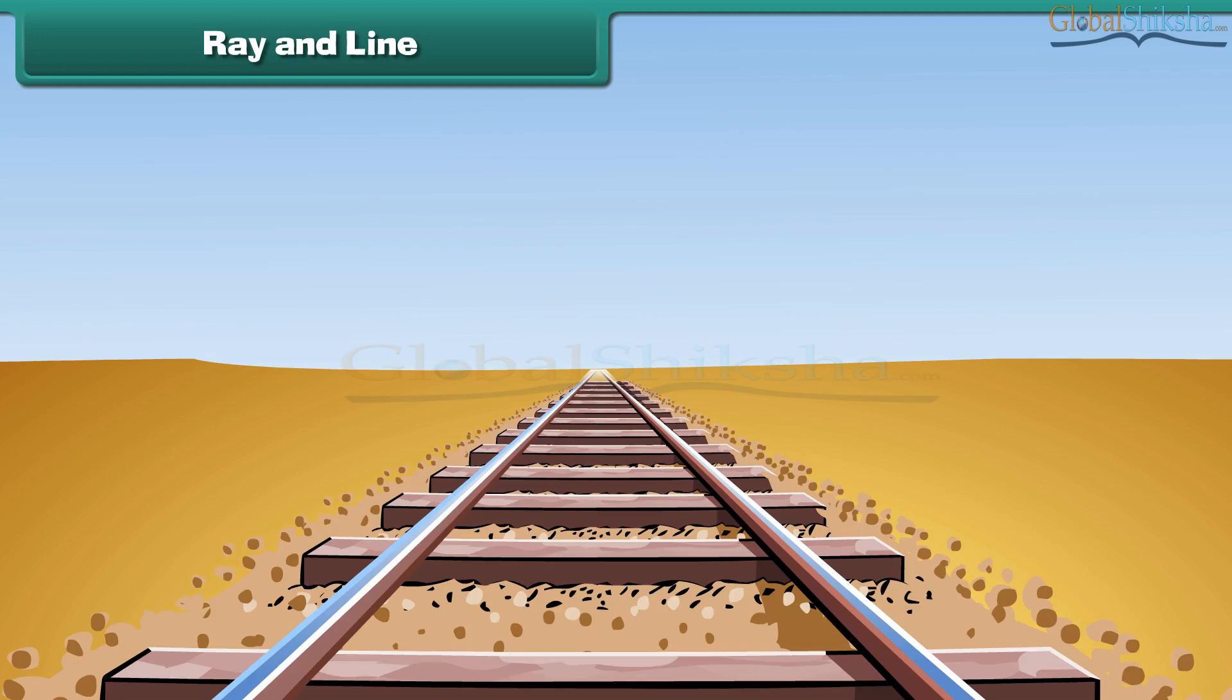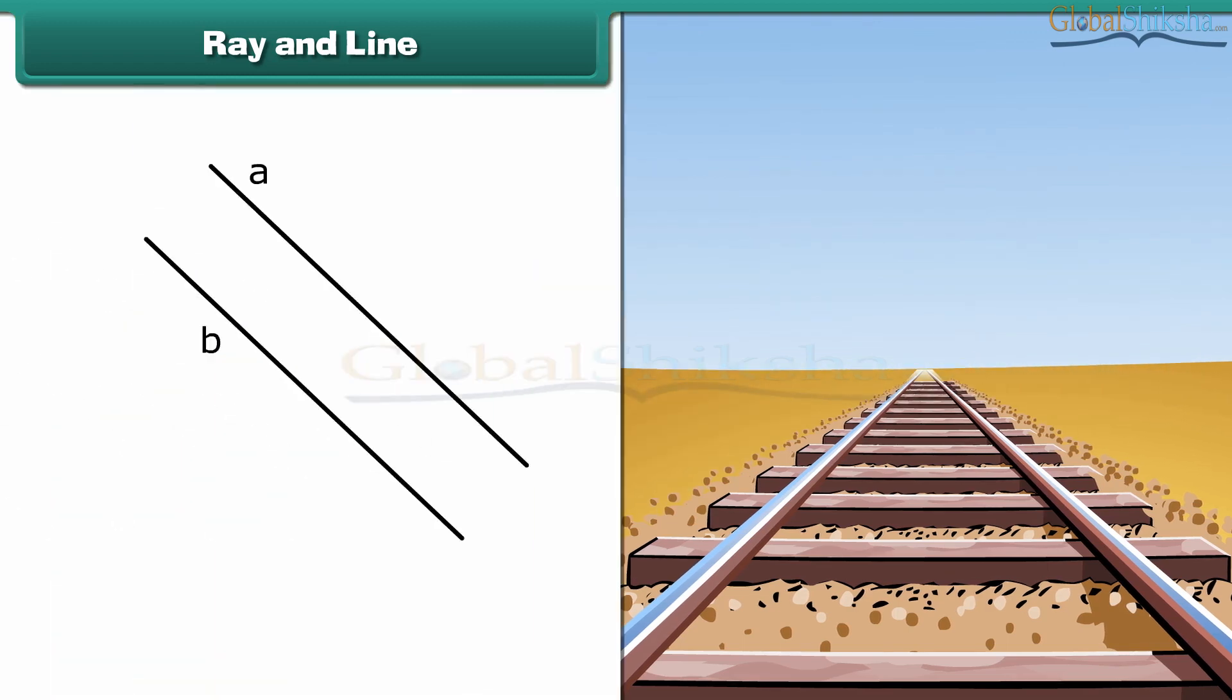Now notice this railway track. The two sides of the track do not cross one another. These sides are parallel. Similarly, two lines are said to be parallel lines if, no matter how far the lines extend in either direction, they never cross each other.